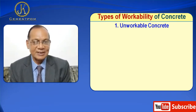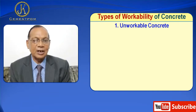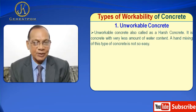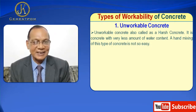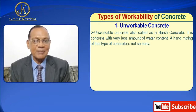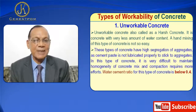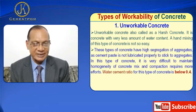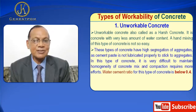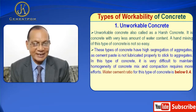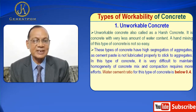There are three types. Number one is unworkable concrete, also called harsh concrete. It is concrete with very less amount of water content. Hand mixing of this type of concrete is not easy. These types of concrete have high segregation of aggregates, as cement paste is not lubricated properly and does not stick to aggregates well.